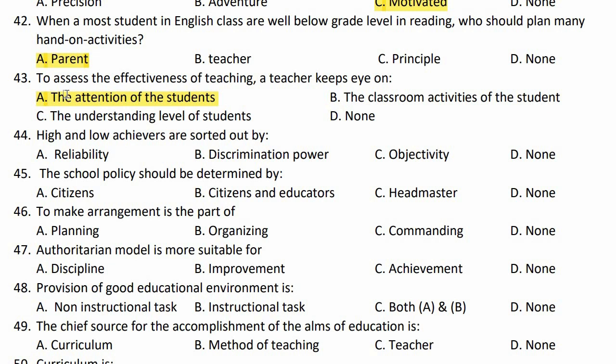High and low achievers on a test can be differentiated by: ability, discrimination power, objectivity, or none of these. The right option is option B — discrimination power.